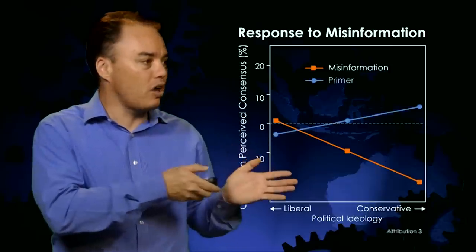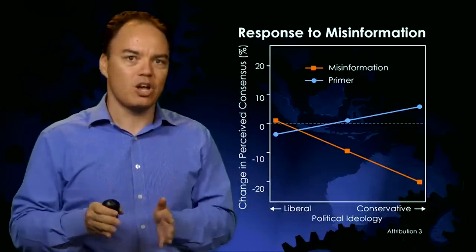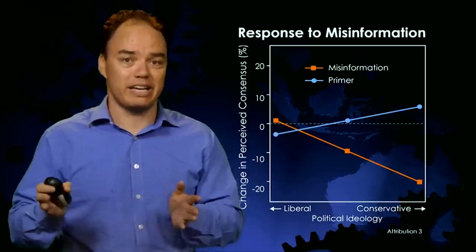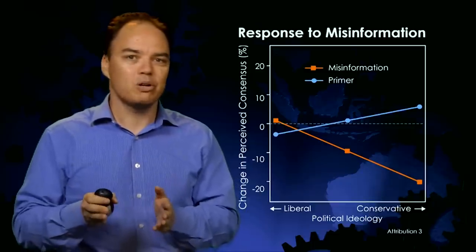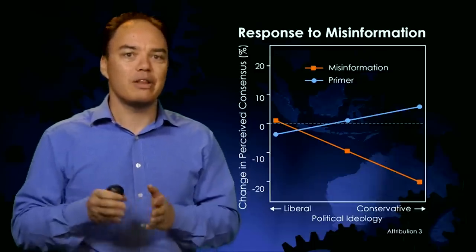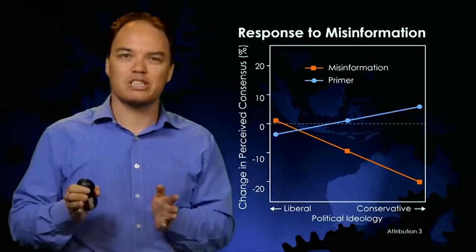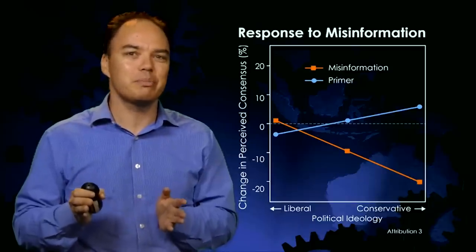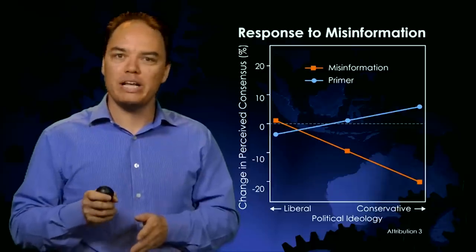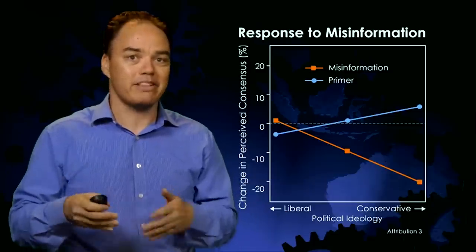The blue line represents another group who first read an explanation of the technique of fake experts, then read the misinformation that used fake experts. When people were informed about the fake expert strategy prior to reading the misinformation, the misinformation was neutralised. Intriguingly, it even caused a slight increase in conservatives' perceived consensus after reading the misinformation. If people already understand the fallacy of a myth when they encounter it, then that myth can backfire.